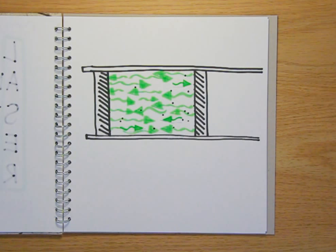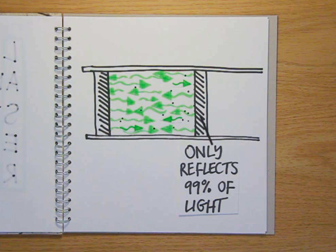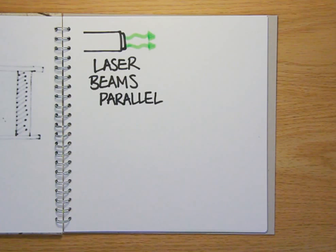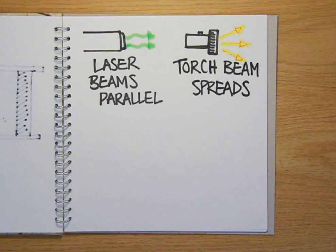One of the mirrors is engineered to reflect only 99% of the light hitting it, allowing through the other 1%, which we see coming out of the end as the laser beam. And because all the photons are traveling in the same direction, the beam of a laser is parallel and doesn't spread out like the beam of a torch.